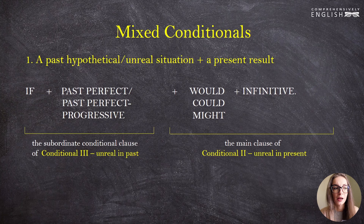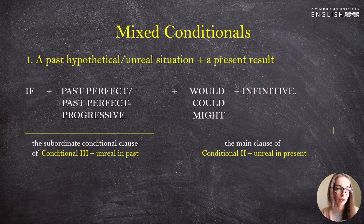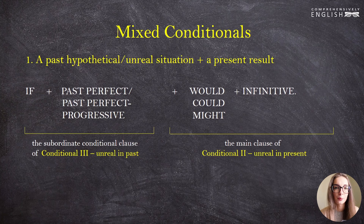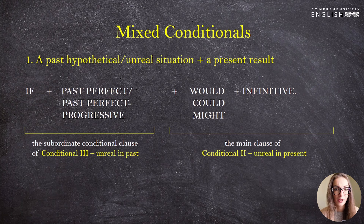The formula of this type of sentence is: if plus the past perfect or the past perfect progressive, plus 'would,' 'could,' or 'might' plus the infinitive. The if-clause belongs to the third conditional type — unreal in the past — and the main clause belongs to the second conditional type — unreal in the present.